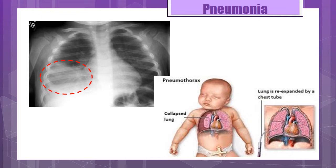The incidence of pneumonia caused by H. influenzae type B has decreased due to immunization. Causative organisms include group B strep, chlamydia, RSV, rhinovirus, adenovirus, and pneumococcus. Immunocompromised children may develop pneumonia caused by gram-negative organisms or fungi. Aspiration pneumonia occurs when children aspirate small objects such as peanuts or popcorn. It can also occur in the newborn, such as aspiration of meconium, formula, or amniotic fluid. Aspiration of an oil-based substance such as oil-based nose drops can also cause pneumonia.